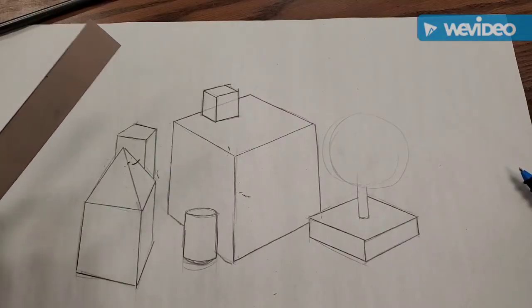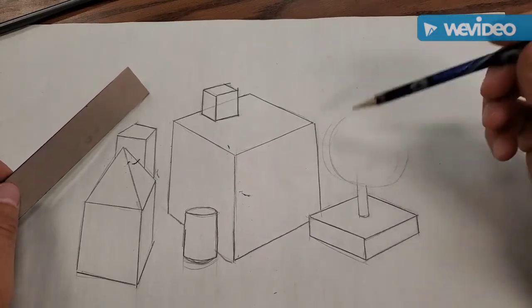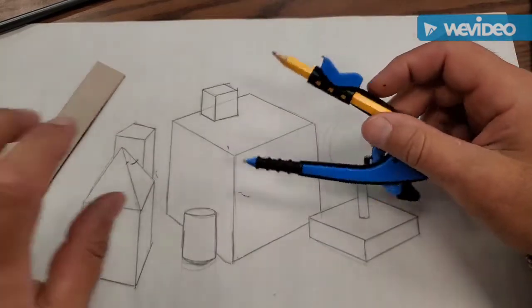So here's my drawing. I went back in, and I darkened the lines in the drawing. But I've got this circle. And when I draw a circle, I like using a compass.